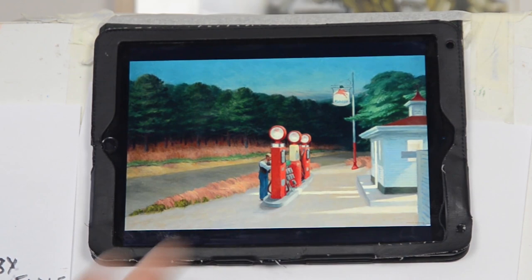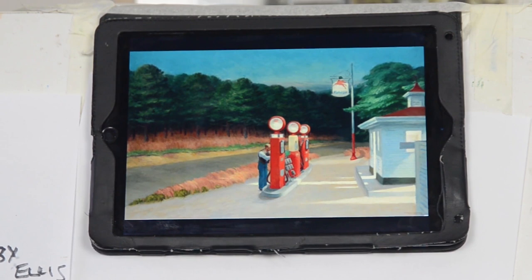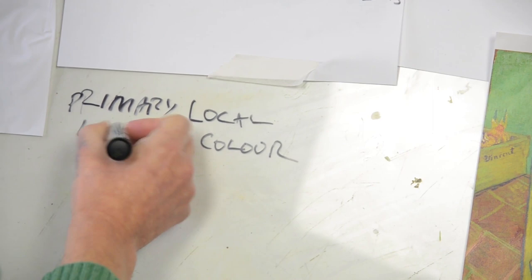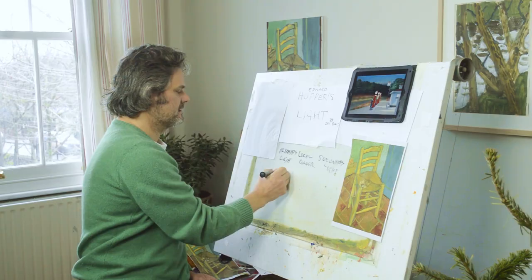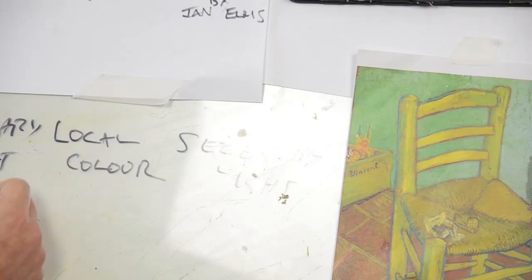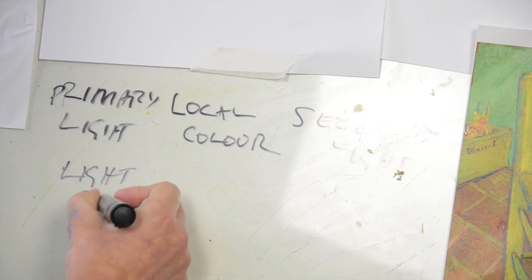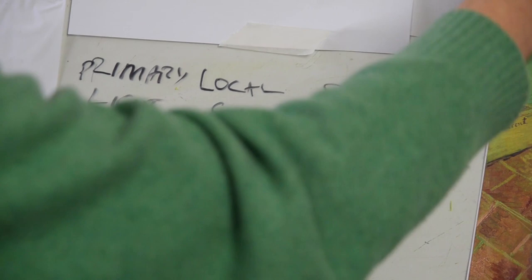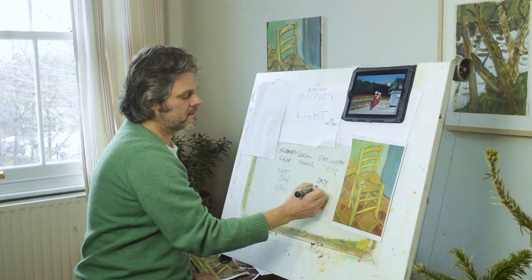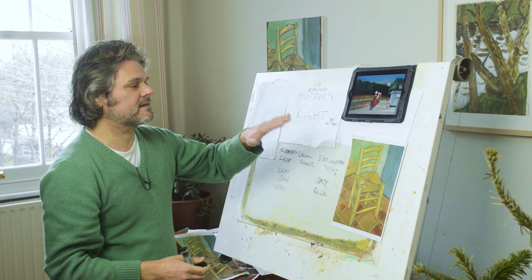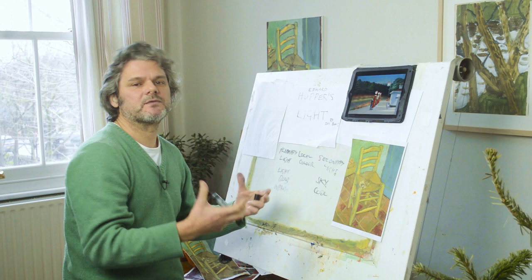In most impressionist paintings, you would say there's a primary light source. In this case it's the light bulb — artificial light — which is warm. Then you get the secondary light, which is the sky colour, a blue, which is cool. What's interesting about Hopper is he tends to go for complementary colours as well. So you have a yellow light, and the complementary will be a blue, kind of purple blue.